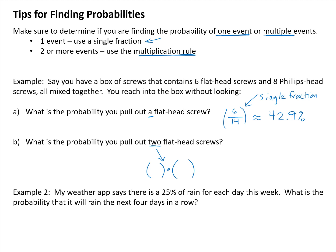The probability you pull out two flathead screws, the first chance of pulling one out would be 6 out of 14 like we had above. And then if we don't replace that first one, which it doesn't say we do, that means there's only five flathead screws out of 13, five out of 13, and that would be approximately 16.5%. So the difference between one and two things.